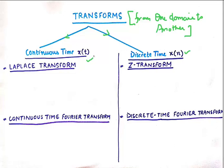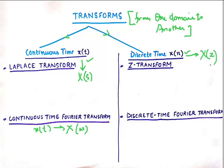A continuous time signal is represented by x(t). When we transform this signal we go into another domain that is a function of frequency. The Laplace transform takes our signal from the time domain to the frequency domain, represented by capital X(s). The Fourier transform takes x(t) to capital X(Ω), which is again a frequency domain representation. Similarly, for discrete time signals, the Z-transform produces X(z), and the discrete time Fourier transform produces X(Ω).